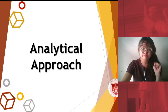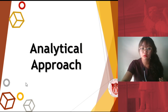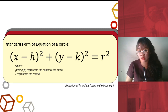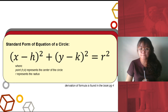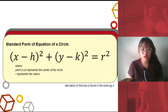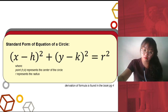Number one: analytical approach. We would begin with the solving of circles. This is the standard form of the equation of a circle: the quantity of x minus h squared, plus the quantity of y minus k squared, equals r squared. Here, the point with coordinates (h, k) represents the center of the circle, and r represents the radius. If you want to see the derivation of the formula, it's found on your books on page 4. It actually came from the distance formula with some modifications.